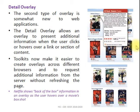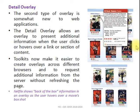The next type is the detailed overlay. It provides detailed information such as reviews and ratings about a movie when you place your cursor on it. The detail overlay allows additional information to be presented when the user clicks, hovers, or selects a link. Toolkits now make it easier to create overlays across different browsers and to request additional information from the server without refreshing the page.